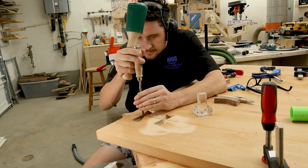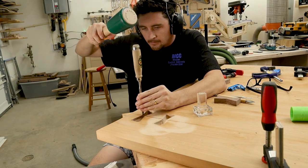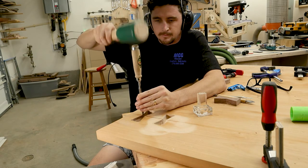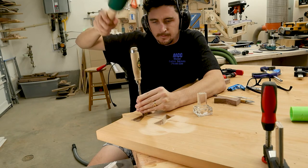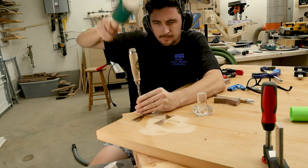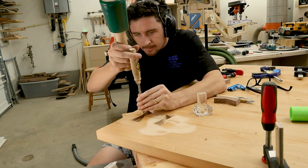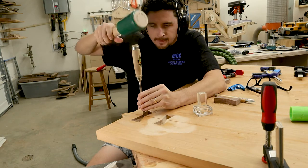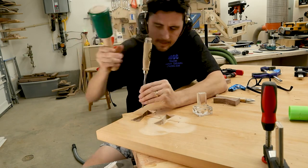So now I'm going to start the chisel work and this is the part of the project that can really make or break how your bow ties turn out. The key to getting really sharp and crispy lines is to have a really sharp chisel. I made a sharpening video if you want to check that out. I'll put the link up in the top corner of this video.